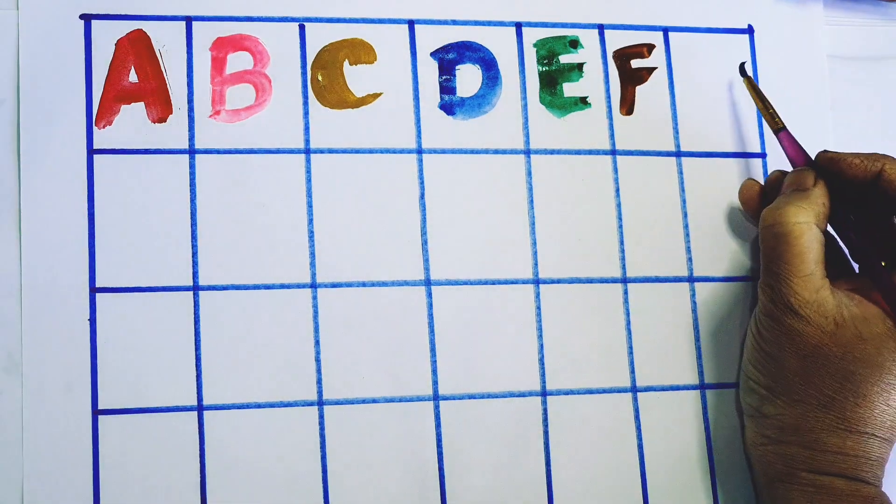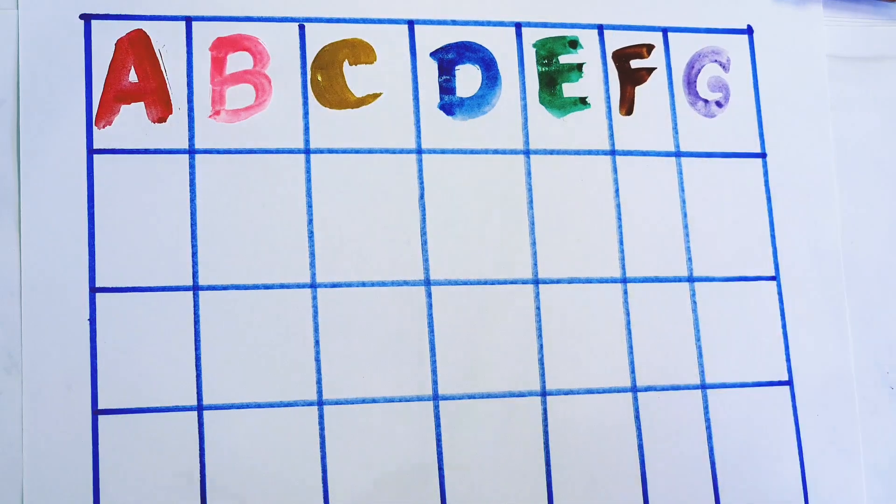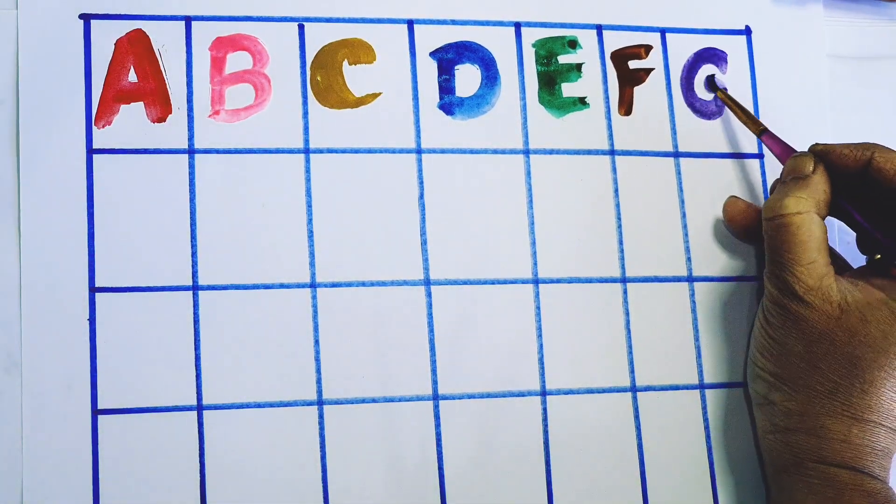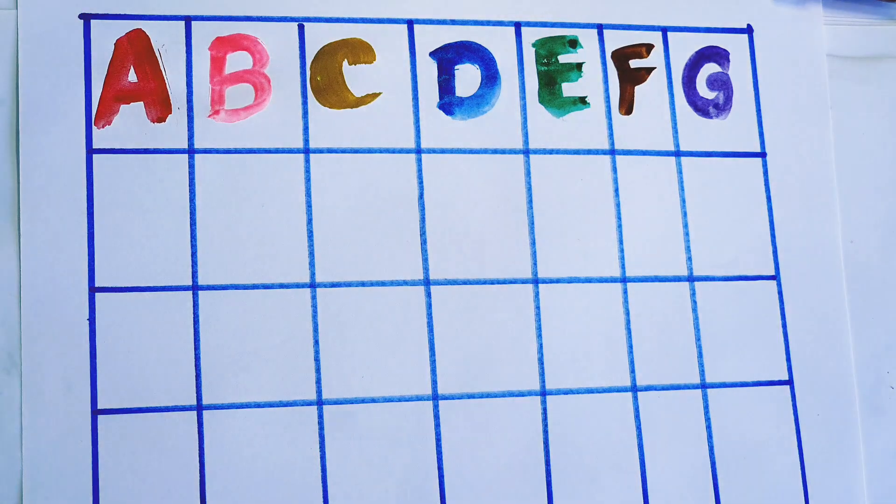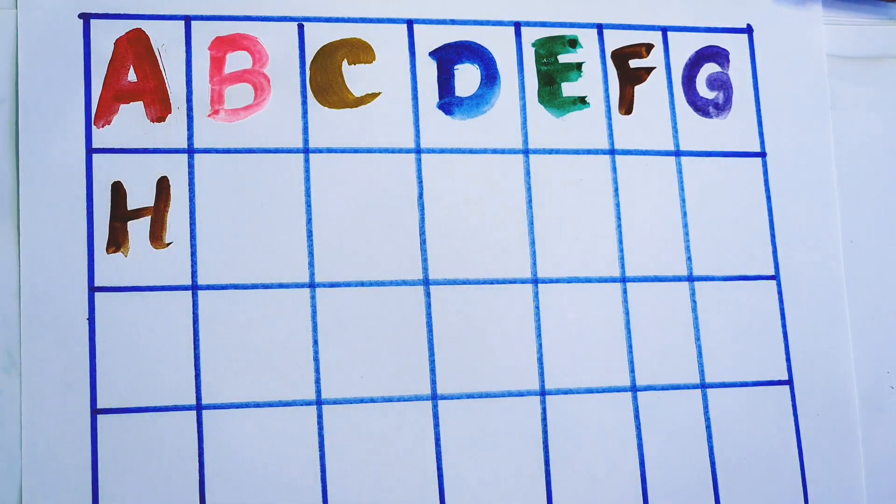Purple color, G, G for Girl. Brown color, H, H for House.